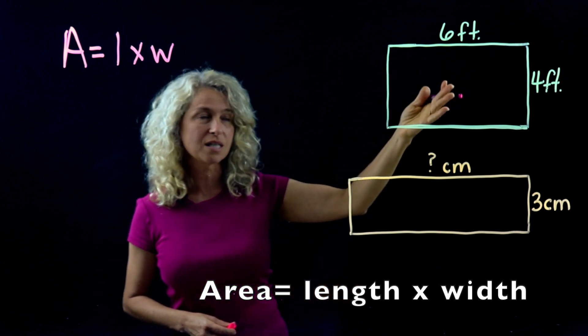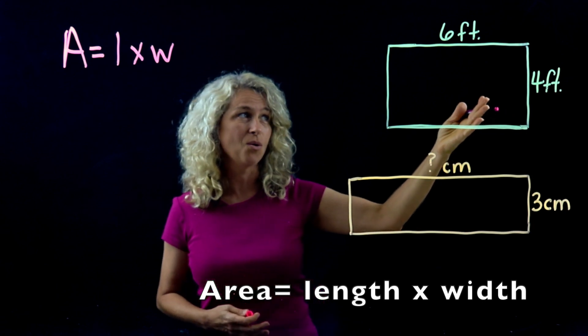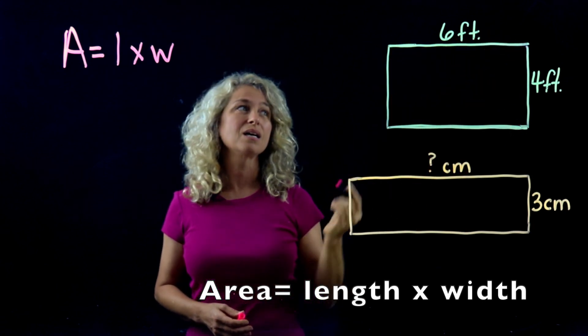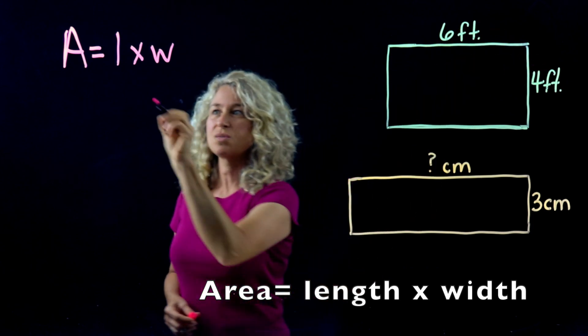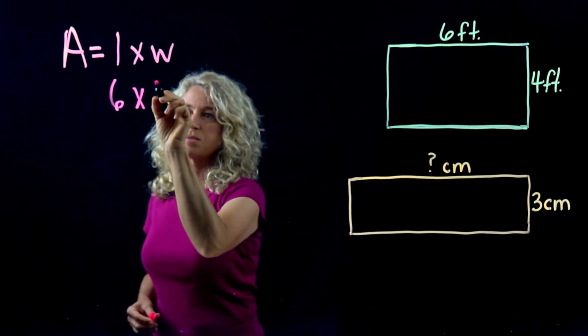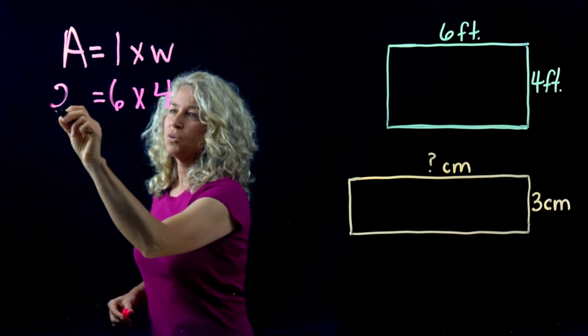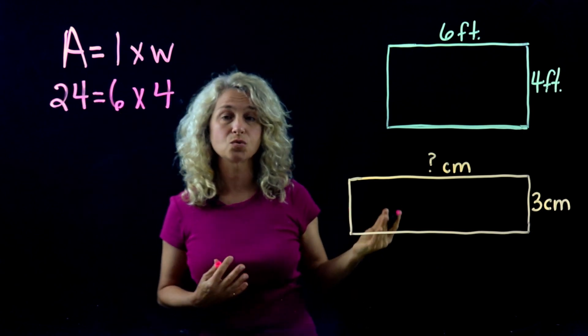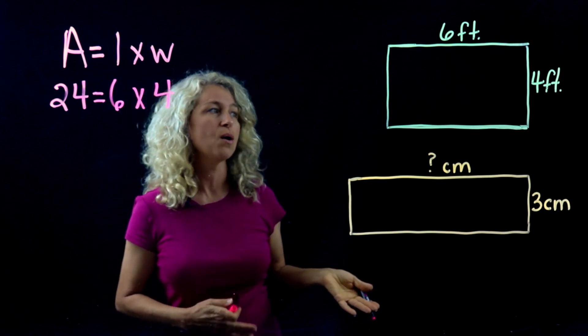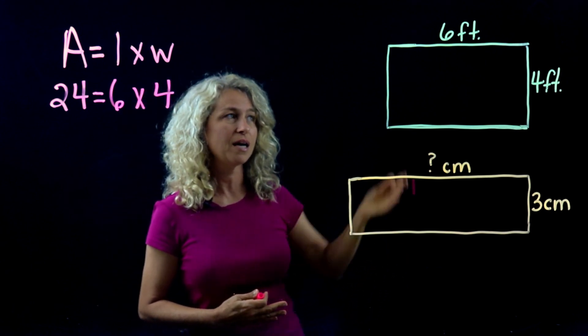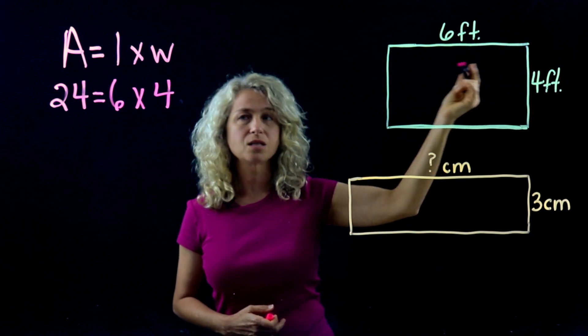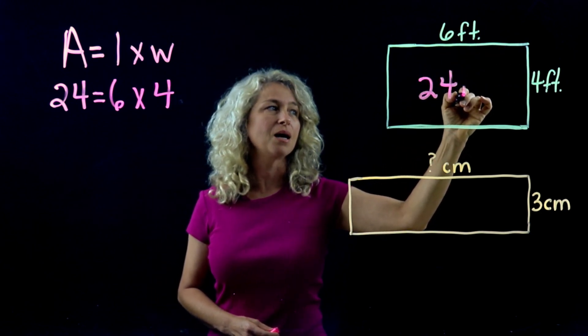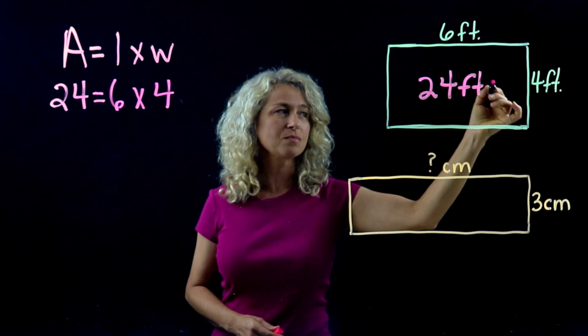So in this first example, it's very simple. We have a length and we have a width. Simply fill in the values: 6 times 4. And so you have an area of 24. In order to write this correctly though, we want to show that this is two-dimensional, and so we want to write 24 feet squared. The two here means squared.